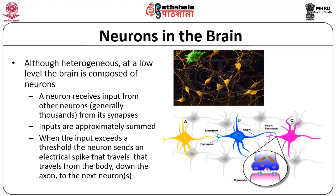The head is the place where the neuron receives inputs from adjacent neurons. Multiple layers of neurons connect to another neuron through the head, and through this point the stimulants are transmitted. A neuron receives input from other neurons only through the head. In both the head and the tail, there are various points that link to other neurons, and the point where one neuron connects to another neuron is called a synapse. The input coming from one layer of neurons to another is only via the synapse.